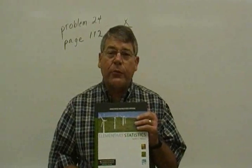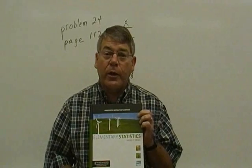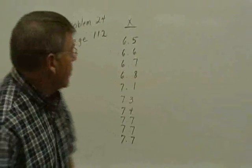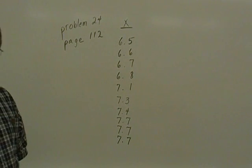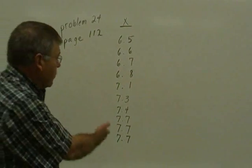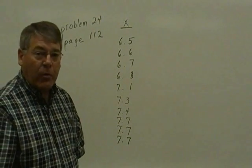First of all, we'll be taking this problem from the textbook, which is Elementary Statistics by Triola, 11th edition, and we will be working problem number 24, page 112. Now, this is the first part of a two-part problem in the textbook. What I would do is just work out the first part, which is the first set of data in that problem.